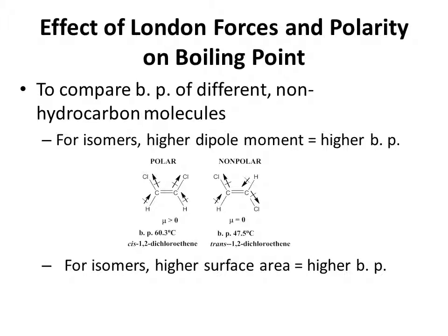For isomers with the same dipole moment, all that matters is the surface area, and increased surface area will increase the boiling point. For example, isomer A with a boiling point of 151 degrees Celsius is stretched out and has a very large surface area, compared to isomer B with a boiling point of only 106 degrees Celsius, where the carbon chain has been squished into a branched carbon fragment, giving it a much smaller surface area and thus a lower boiling point.